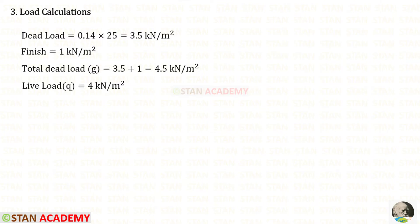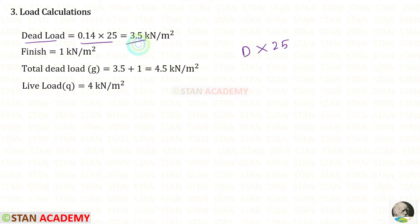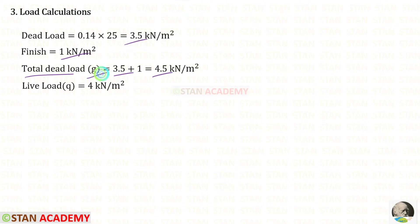Now let us make the load calculations. To find the dead load, we multiply the overall depth D by the unit weight of concrete, which is 25 kilonewton per meter cube. That gives 3.5. Adding the floor finish of 1 kilonewton per meter square, the total dead load G is 4.5 kilonewton per meter square. The live load Q is 4 kilonewton per meter square as given.